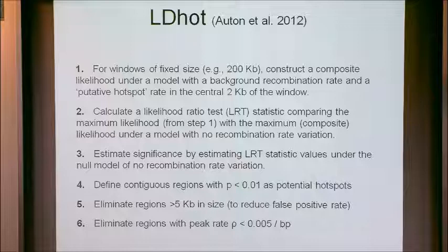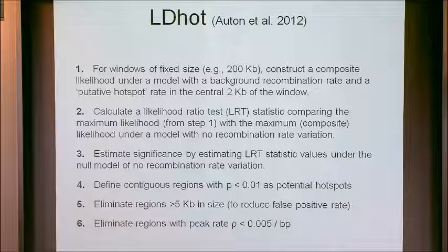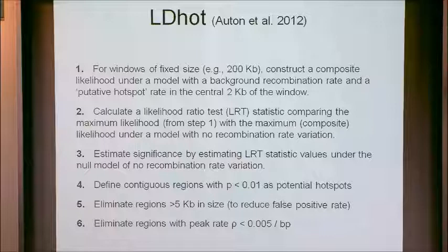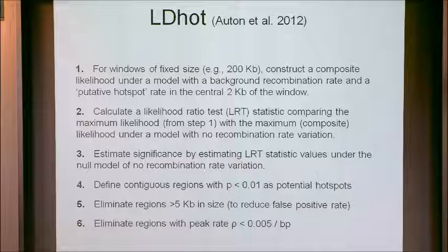To estimate significance — since you're dealing with composite likelihood — they ran many simulations to get a p-value attached to whether there seemed to be a hotspot in a particular location. Then they shift their window over by one KB and do the same thing again. You can think of them breaking up the genome into millions of these 200 KB windows, doing the analysis, estimating a p-value, and moving on. It's step three — estimating the significance by running many simulations — that takes all the time.